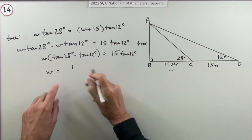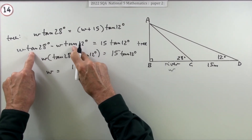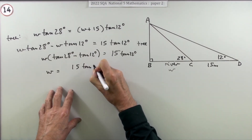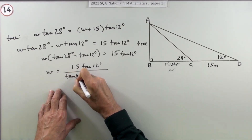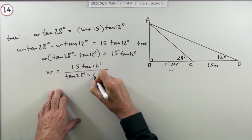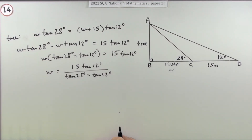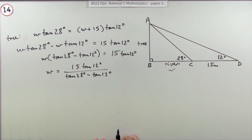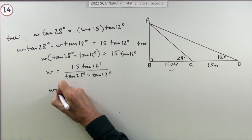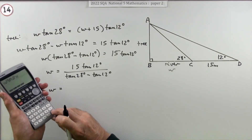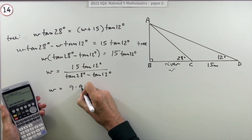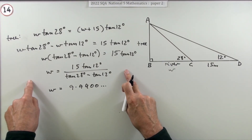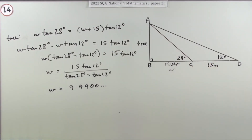Finally, w = 15 tan 12° over (tan 28° − tan 12°). It looks more complicated written this way, and it's the kind of algebraic manipulation used in more advanced questions. But pressing the buttons gives the same answer: 9.9900..., or 9.99 metres. This alternative shows you can solve the problem using only right-angle trigonometry, without needing the sine rule or scaling triangles at all.